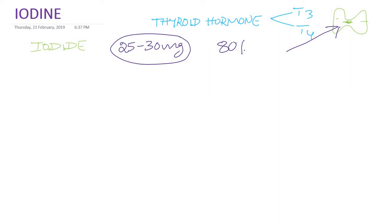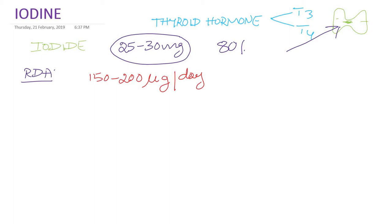The recommended dietary requirement of iodine is about 150 to 200 micrograms per day for normal adults. Growing children require less, about 90 to 120 micrograms. During pregnancy, the mother needs to take more iodine — about 200 to 220 micrograms per day. During lactation, the requirement increases to about 250 to 270 micrograms per day.